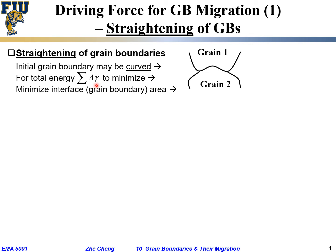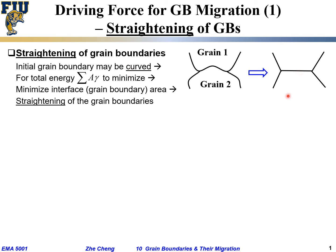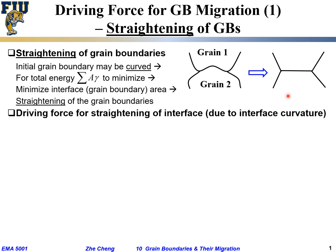To reduce A times gamma — the grain boundary area times the grain boundary energy. Sigma means we may have different grain boundary energy for different types of misorientation. All of these have to be minimized. To minimize the internal area for the same material, we start with a tortuous boundary and it becomes flat naturally. That's the so-called straightening of the grain boundary.